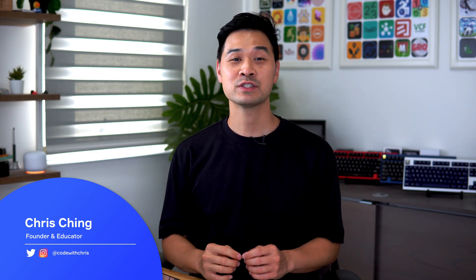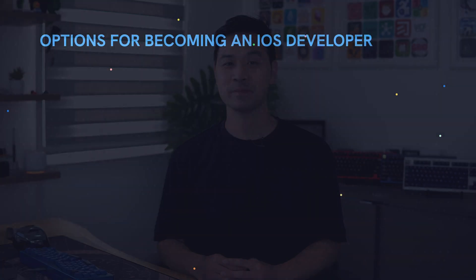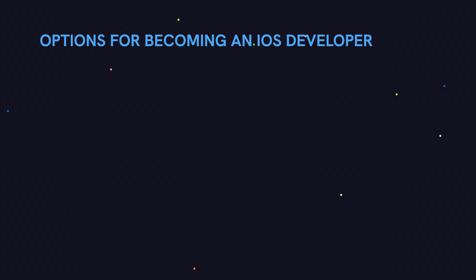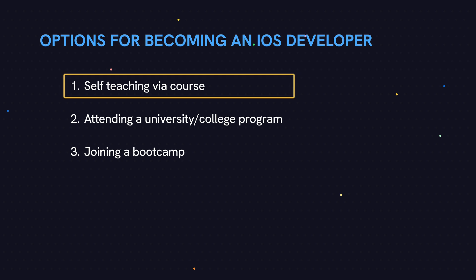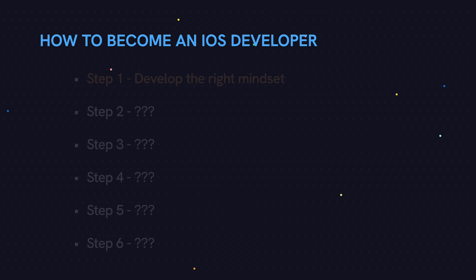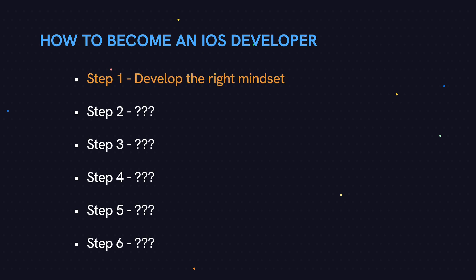In the previous video I covered all the options for becoming an iOS developer, but in this video I want to lay out a step-by-step plan for you to actually achieve it. At a high level, the previous video covered the following options: self-teaching via course, attending a university or college program, or joining a boot camp. And if I were to start all over from day one, I think I would choose to learn on my own. There are just so many good resources out there, including my own, where someone can just pick up this skill.